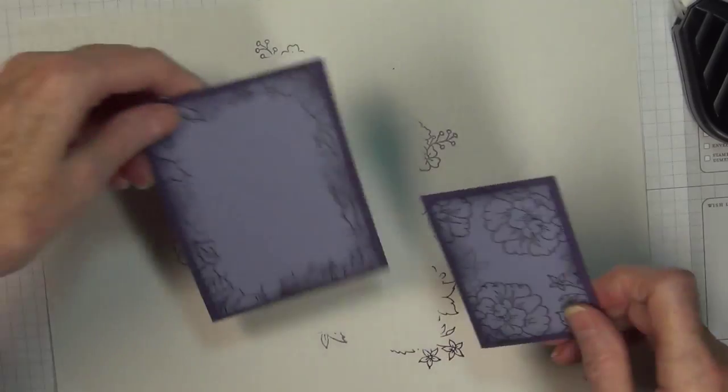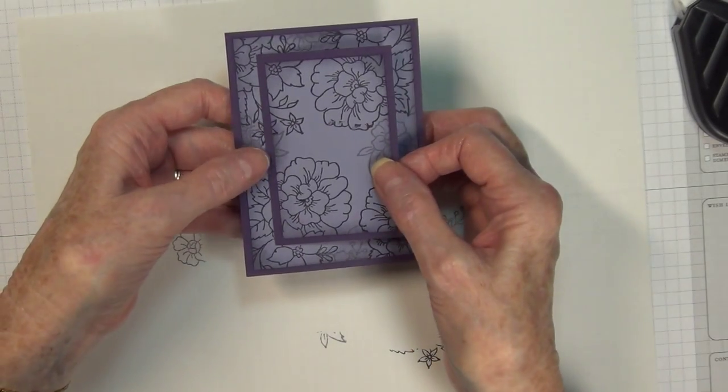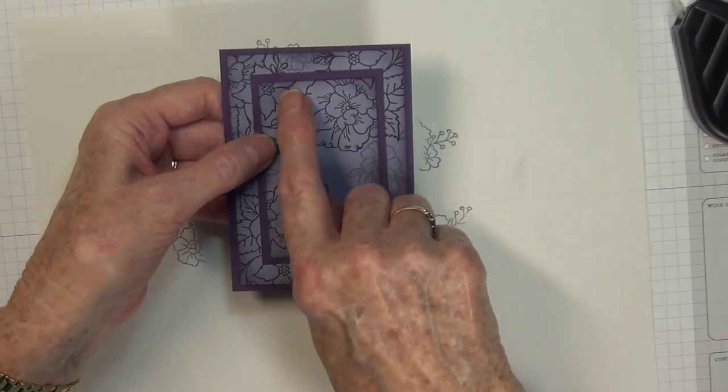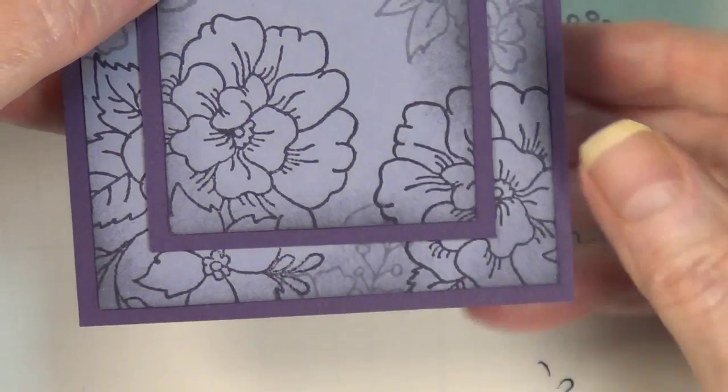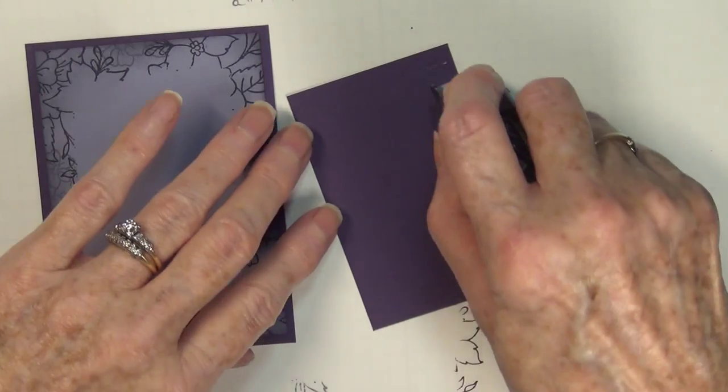Once I get these two adhered onto my mat, then I want to line those up and it's just like a puzzle. You want to kind of put that back together, and I'm going to zoom in so you can see what I'm talking about. You want to make sure that all of those lines are matching back up again. And once I get that all together, now I'm going to adhere those panels together.